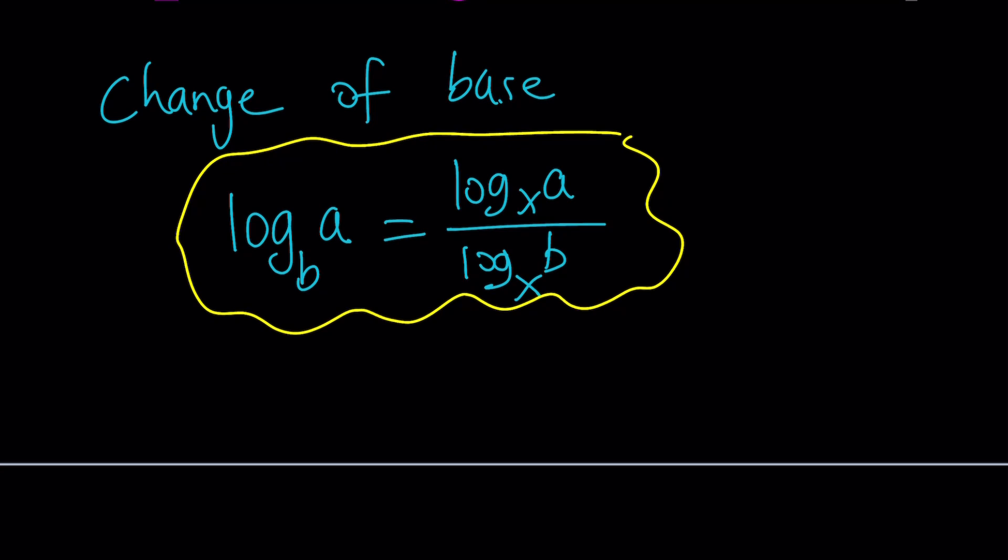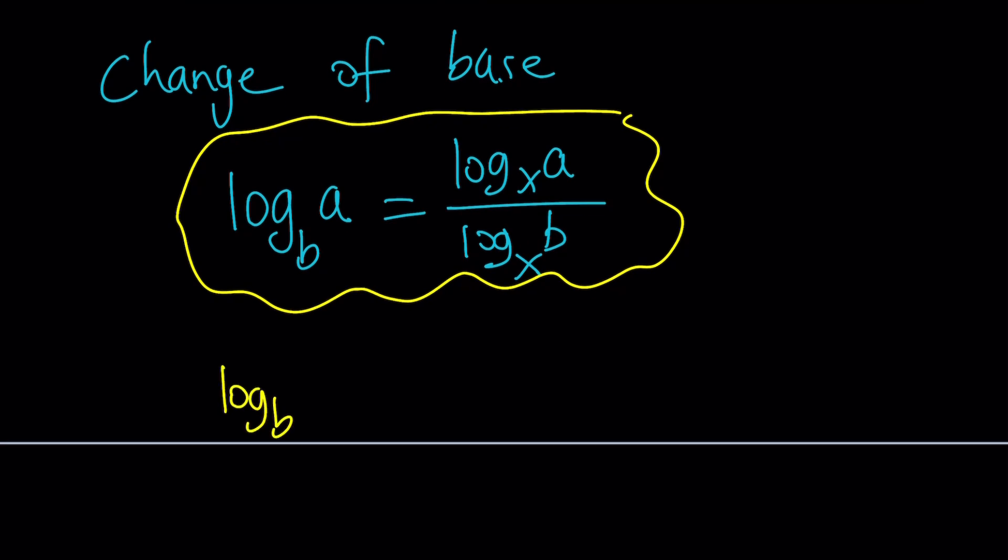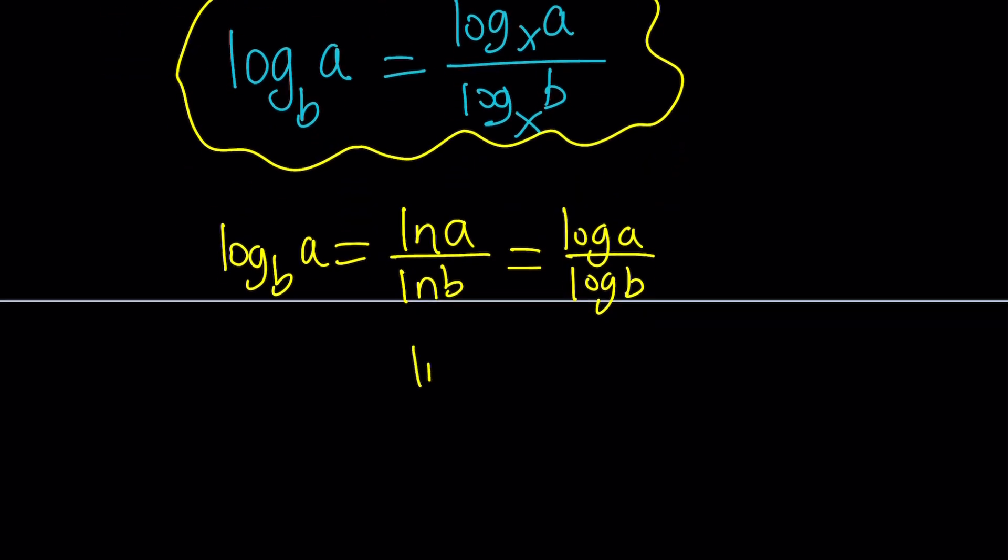A lot of times you're going to see it in this form. We're going to use either ln, so we can write this as ln a over ln b, which seems a little easier, or we could write log a over log b. Whenever you have something like ln a over log a, it's the same thing as ln b over log b, regardless of what the numbers are. So you can change the numbers around, but this ratio is always going to be the same.